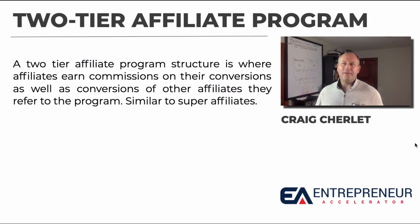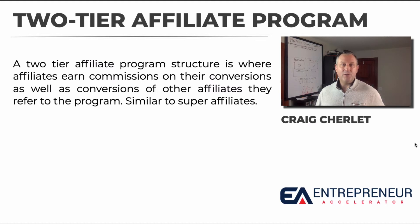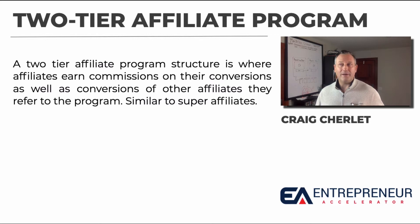A two-tier affiliate program is similar to the super affiliate concept in that you have multiple tiers. Sometimes they'll pay a higher commission when you reach a certain income level — say you're already making $1,000 with a product and they bump you from 20% commission to 40% commission. There are several software companies out there that offer these programs.